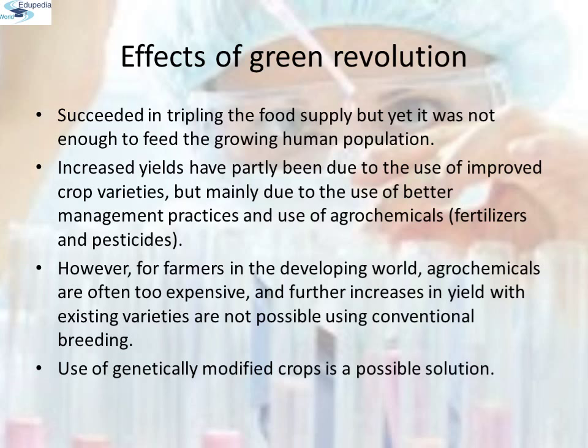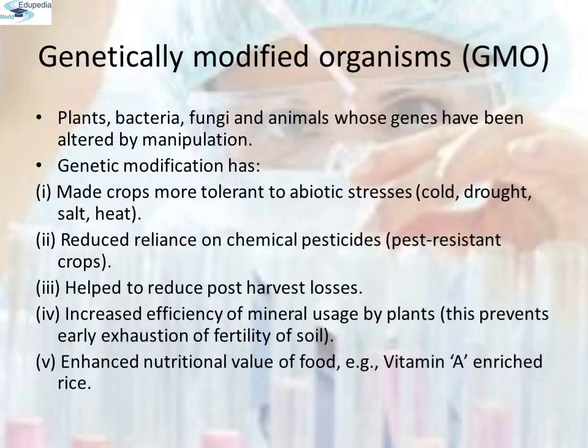Is there any alternative method that our understanding of genetics can show so that farmers may obtain maximum yield from their fields? Is there a way to minimize the use of fertilizers and chemicals so that their harmful effects on the environment are reduced? The use of genetically modified crops is a possible solution for all these things. Genetically modified organisms, or GMO — plants, bacteria, fungi and animals whose genes have been altered by manipulation — are called genetically modified organisms or GMOs.